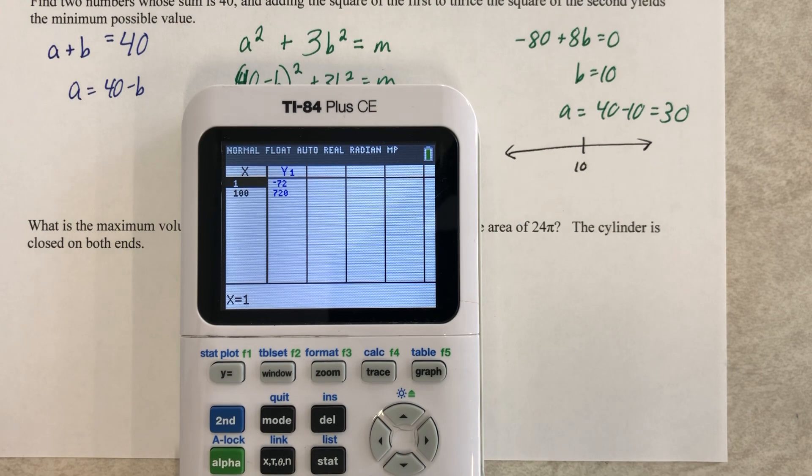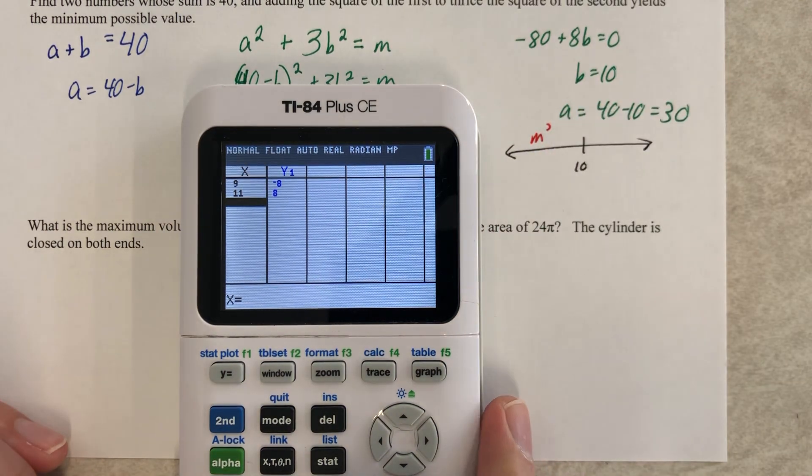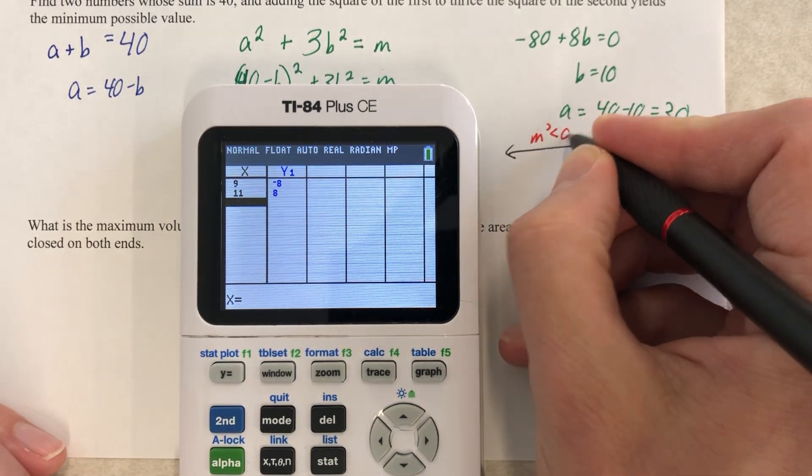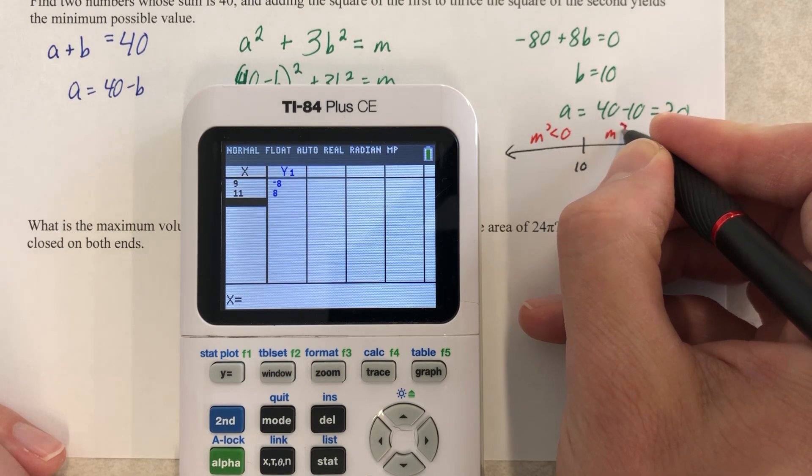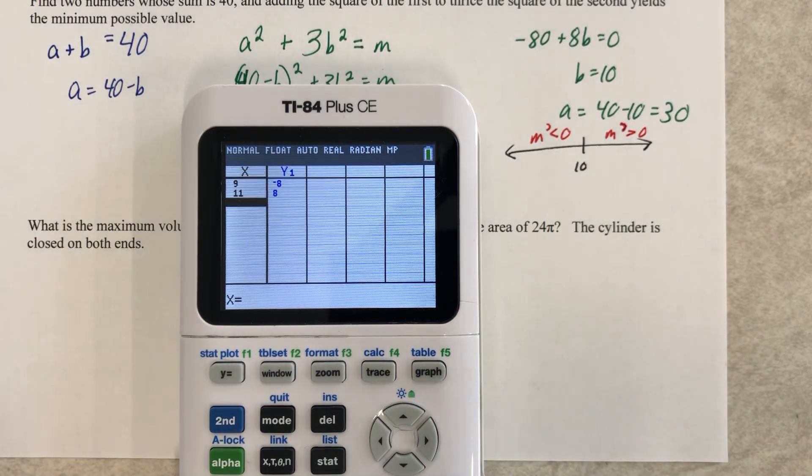So like 9 and 11, and we got the minimum value. The derivative was negative here and positive here. And here's how I kind of knew how to do that in my head, and this is the fun part.